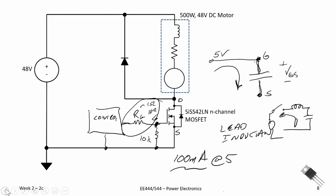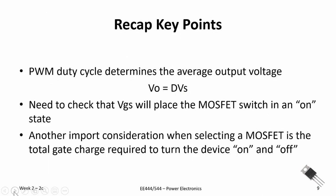Let's recap the key points of this video. First, the PWM duty cycle determines the average output for the DC chopper: V_out = D × V_S. We need to check the gate-to-source voltage on the MOSFET so it can handle the on and off states. Another important design consideration is the total gate charge — it wasn't covered in full detail here, but it determines how fast the MOSFET can turn on and off, making it a critical parameter going forward. Thanks for watching.